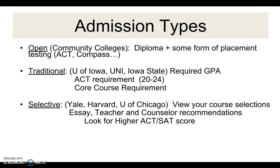Traditional colleges need an ACT or SAT score and core course requirements that students must have met in order to gain entrance. Then we have selective colleges — we're talking Harvard, Yale, University of Chicago, those types. Those colleges will look at what types of classes students have taken in high school, want recommendations from teachers, counselors, and people in the community. Students will have to write an essay, and they're looking for higher ACT and SAT scores.